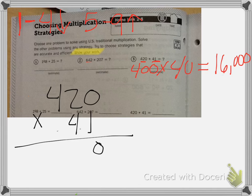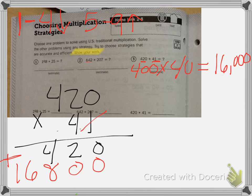420 times 41. 1 times 0 is 0, 1 times 2 is 2, 1 times 4 is 4. Same exact thing. Cross that 1 off, we are done with it. Drop down that 0. 4 times 0 is 0, 4 times 2 is 8, 4 times 4 is 16. Now we have to add them together. 0 plus 0 is 0, 2 plus 0 is 2, 4 plus 8 is 12. Carry that 1. 6 plus 1 is 7, and one more. Add my comma. My answer is 17,220.